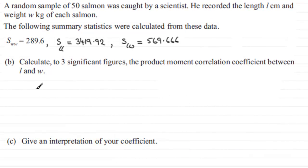Now in part B of this question, we've got to calculate to three significant figures the product moment correlation coefficient between L and W. In the previous part we worked out what SLL was and SLW were, and we're also given SWW. So how do we work out product moment correlation coefficient between L and W? Well, normally you're